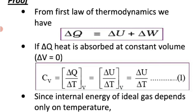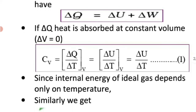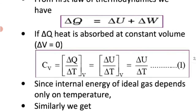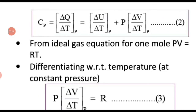So we have Cv = ΔU / ΔT. The internal energy of an ideal gas depends only on temperature, so we can say Cv = ΔU / ΔT. When the gas is heated at constant pressure, we can write Cp = ΔQ / ΔT at constant pressure.